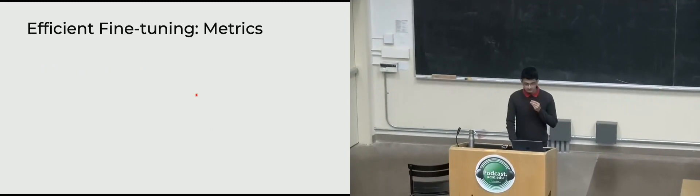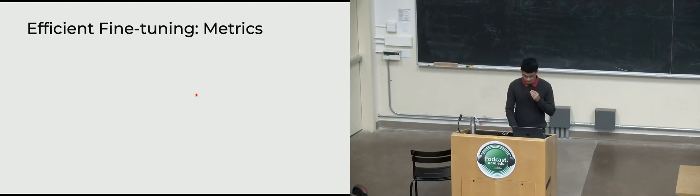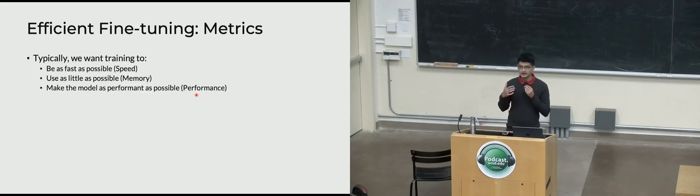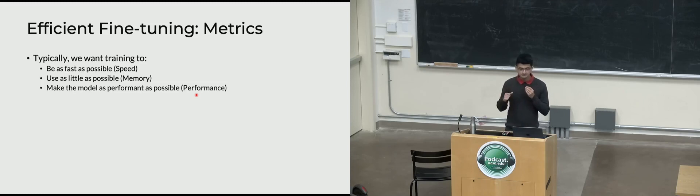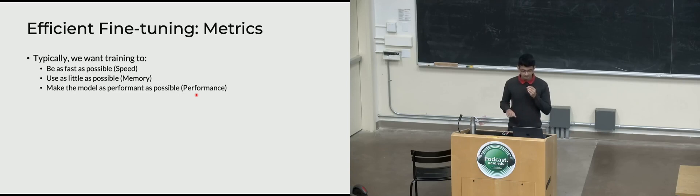We want to fine-tune models, but we also care about multiple things. In terms of rough metrics: you want training to proceed as fast as possible, so you care about speed or throughput; you want to use as little resources as possible, so you care about memory; and you want to make the model as performant as possible, so you care about model performance. Model performance is set by you for your task and benchmark, so we won't focus on it here.